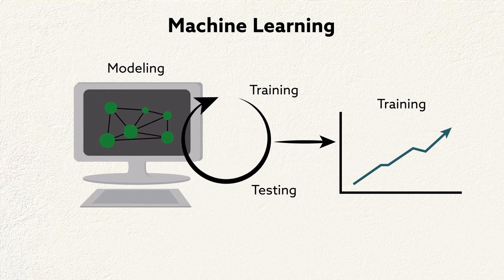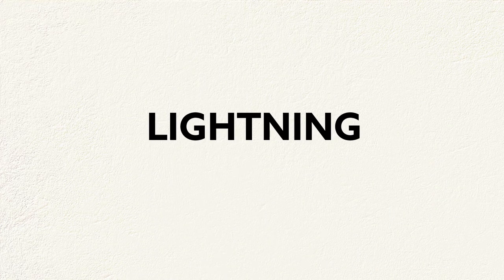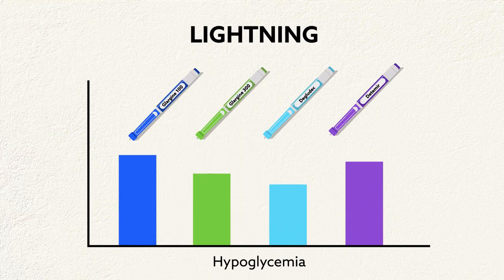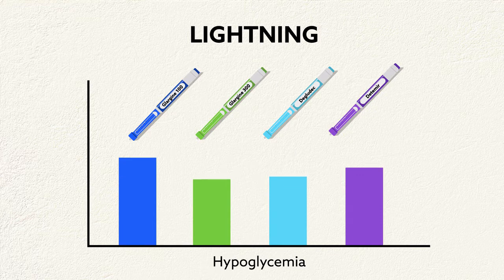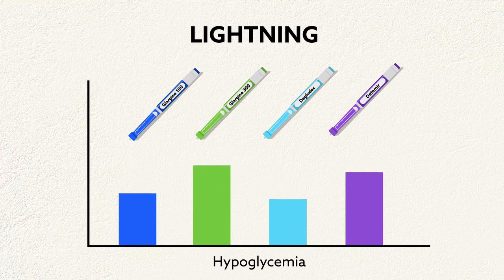This is a process called machine learning. The LIGHTNING study uses advanced methods, including machine learning, to predict hypoglycemia rates in people with type 2 diabetes using first- and second-generation basal insulin analogs by analyzing electronic medical records.